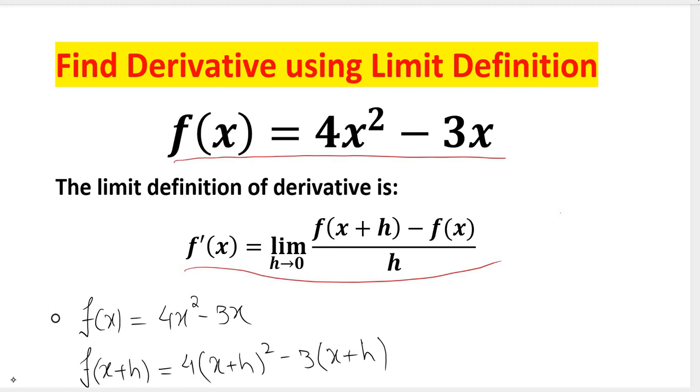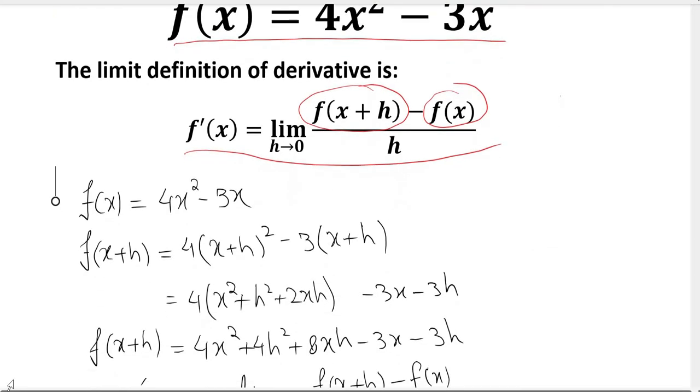So what we need to do is find f(x + h), whereas f(x) is already given. We are given f(x) which is 4x squared minus 3x, and we need to find f(x + h).